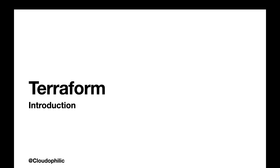So we can say that Terraform is a way to achieve infrastructure as code. Infrastructure as code means the infrastructure can be created by means of code or script. With this script, new resources can be created and replicated in different environments as needed. For example, if you are creating a development server, you can use the same configuration file to create a staging server as well.